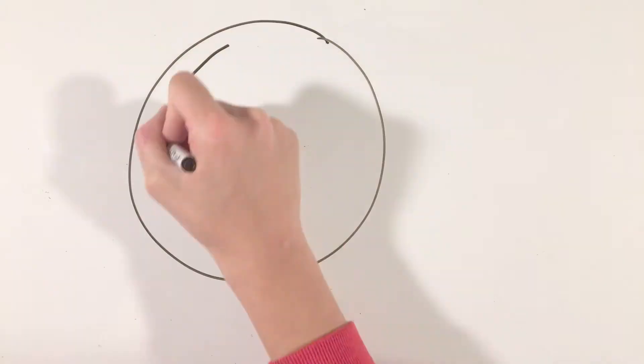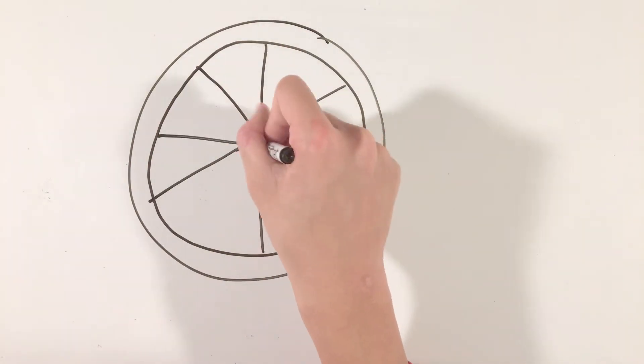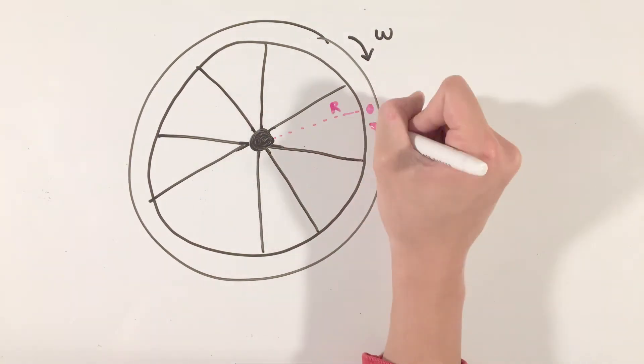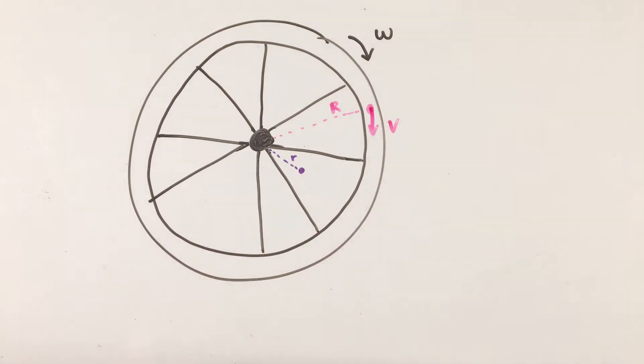What this equation tells us is that while all parts of a rotating object rotate at the same rate or have the same angular velocity, each point on the object has a different tangential velocity depending on the distance from the axis of rotation.